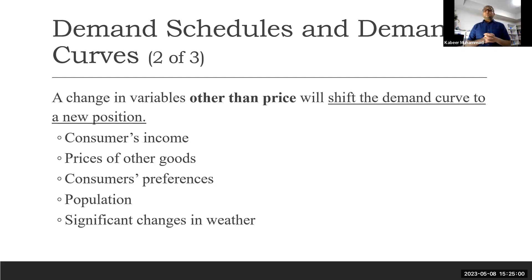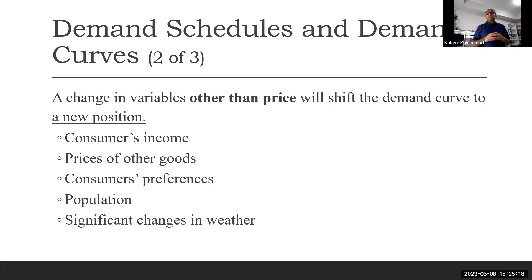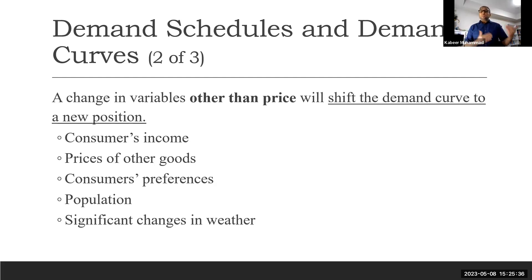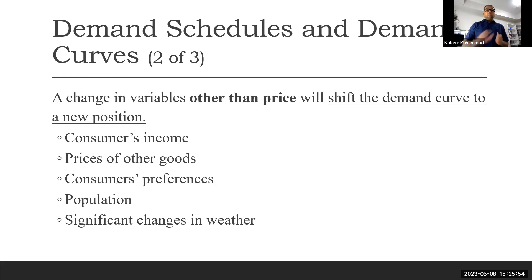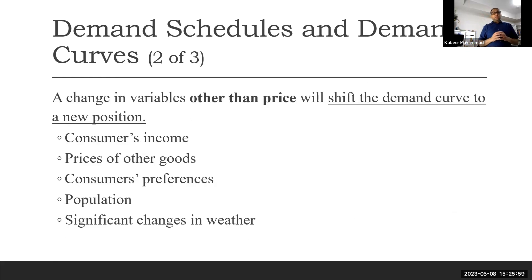Consumer preferences — a broad term covering fashion, trends, taste, environment, and weather — can also change demand. In summer, demand for cold drinks and ice creams increases; in winter, demand for coffee and hot drinks increases. Population is another determinant: with an increase in population, demand increases and the curve shifts right; a decrease in population shifts it left. Significant changes in weather and expectations are also important factors that shift demand.